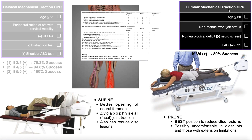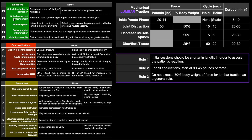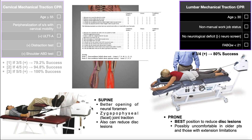Unlike cervical traction, which is done primarily in supine, lumbar traction can be done in supine or prone. Supine mechanical traction provides better opening of the neural foramen, relieving pressure or compression on the nerve roots. Although the CPR favors no neurological deficit, you can still use traction when there is spinal nerve root impingement — not satisfying the CPR doesn't mean you can't use it. Supine also provides better zygapophyseal or facet joint traction and is a good position to reduce disc lesions.